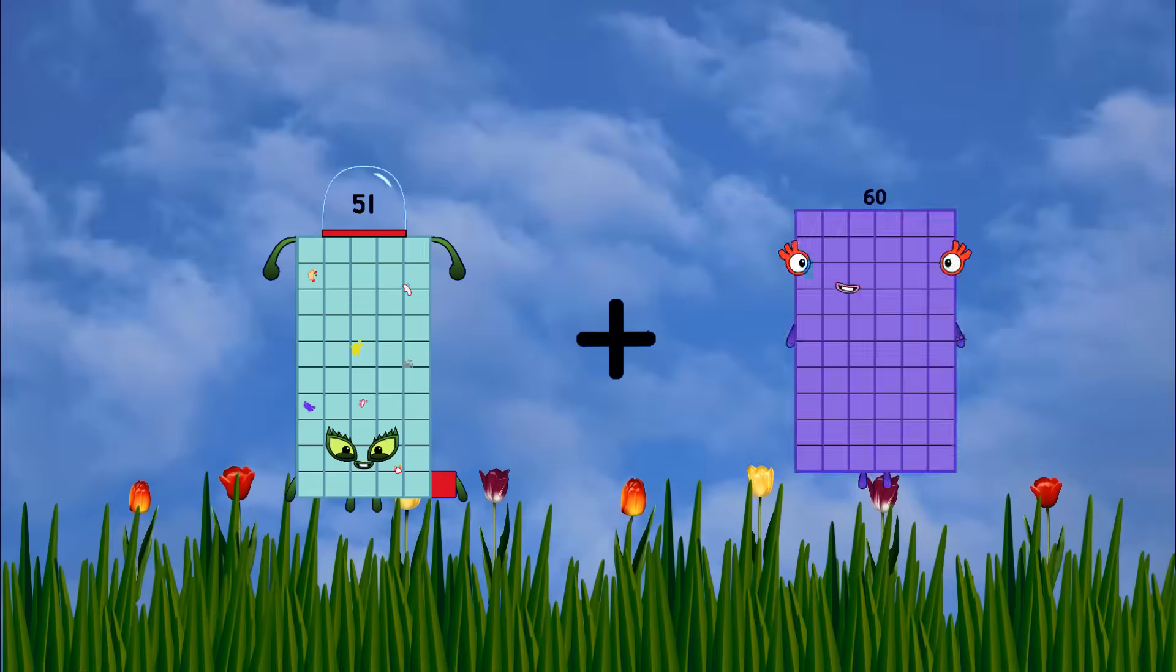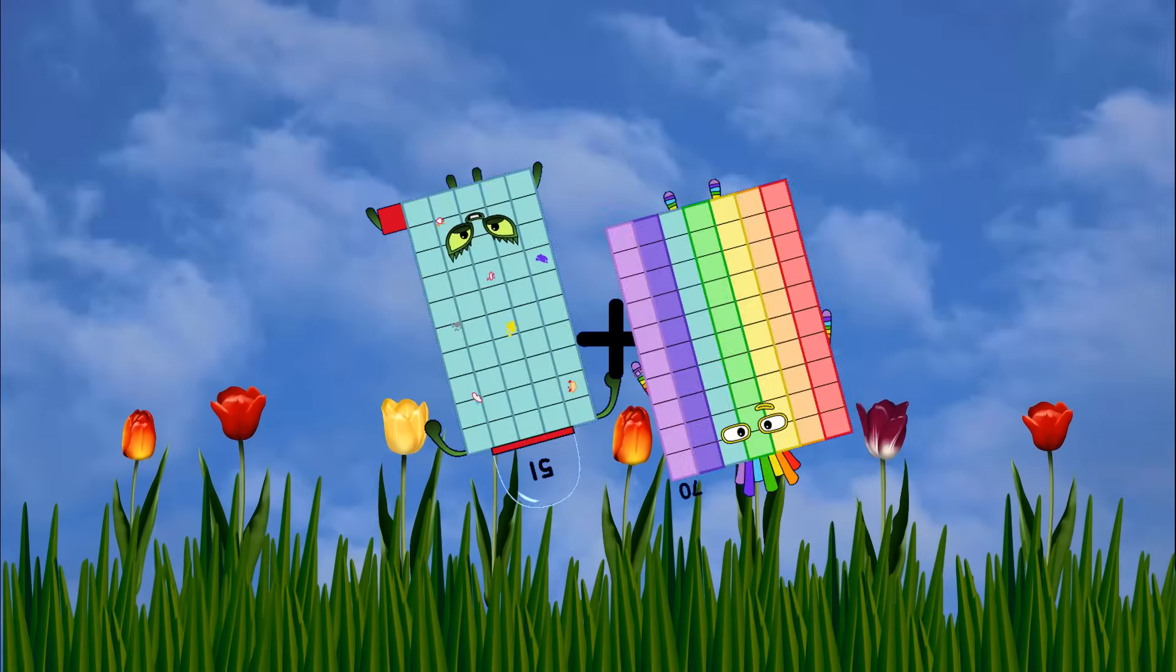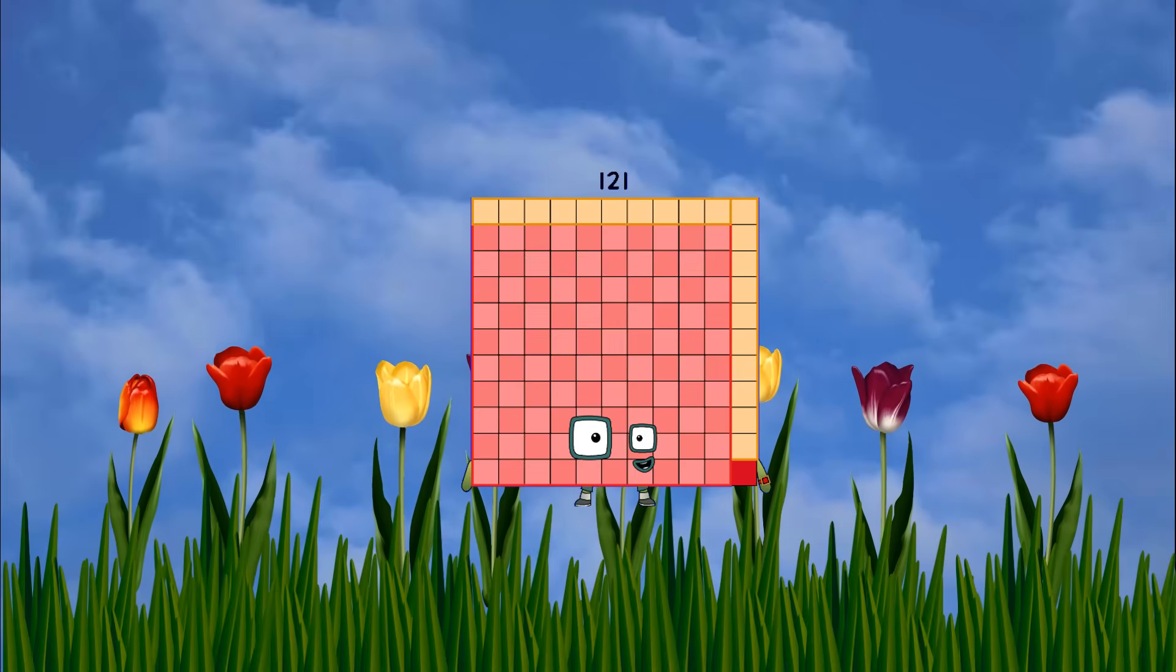Fifty-six plus seventy equals one hundred twenty-one.